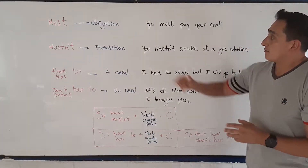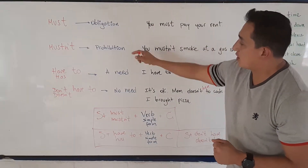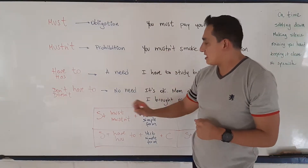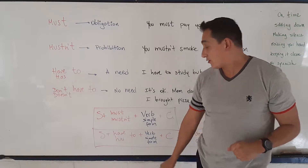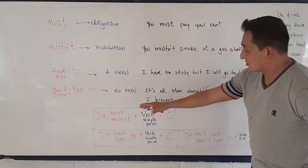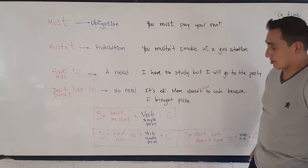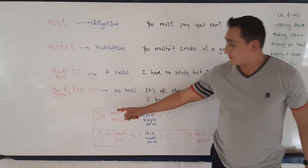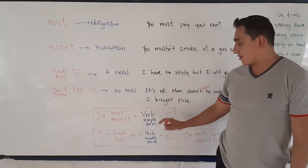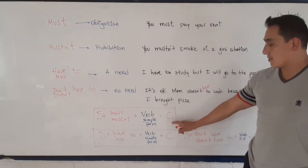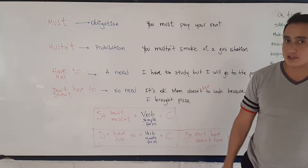So remember: obligation, prohibition, need or no need. And of course, you have the structures over here. Subject plus must, the verb in simple form, and a complement.